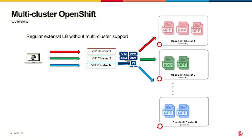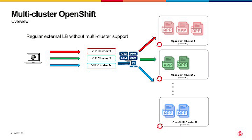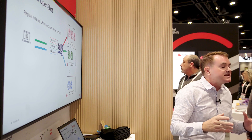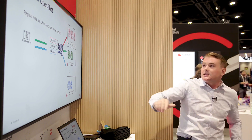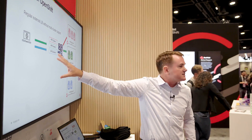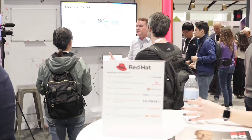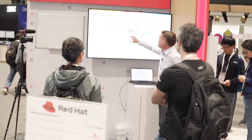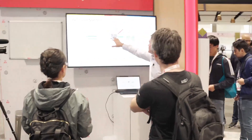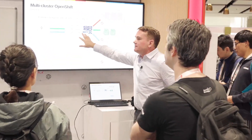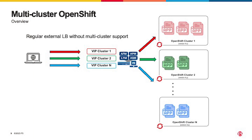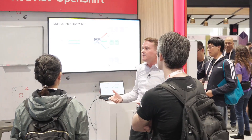Traditionally, a multi-cluster solution required multiple ingresses: a virtual for one app, another virtual for a second app, and so on. For example, virtual one for cluster one, virtual two for cluster two, virtual three for cluster three. Most multi-cluster organizations operate this way today, but managing separate load balancer entries for each cluster is difficult.